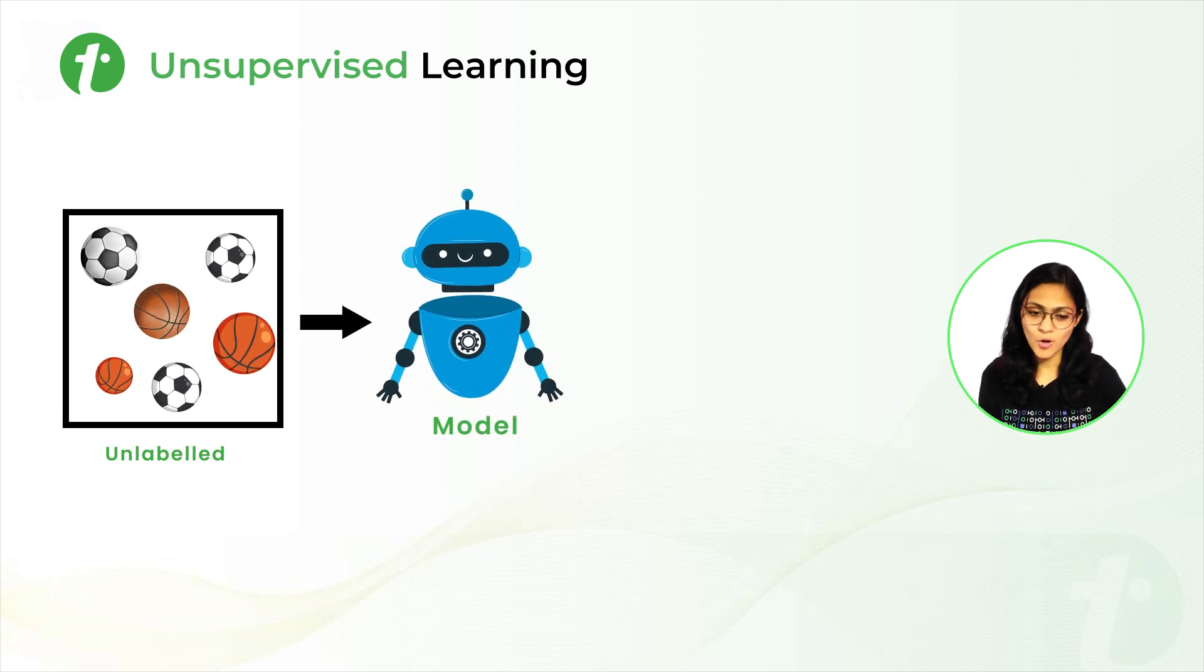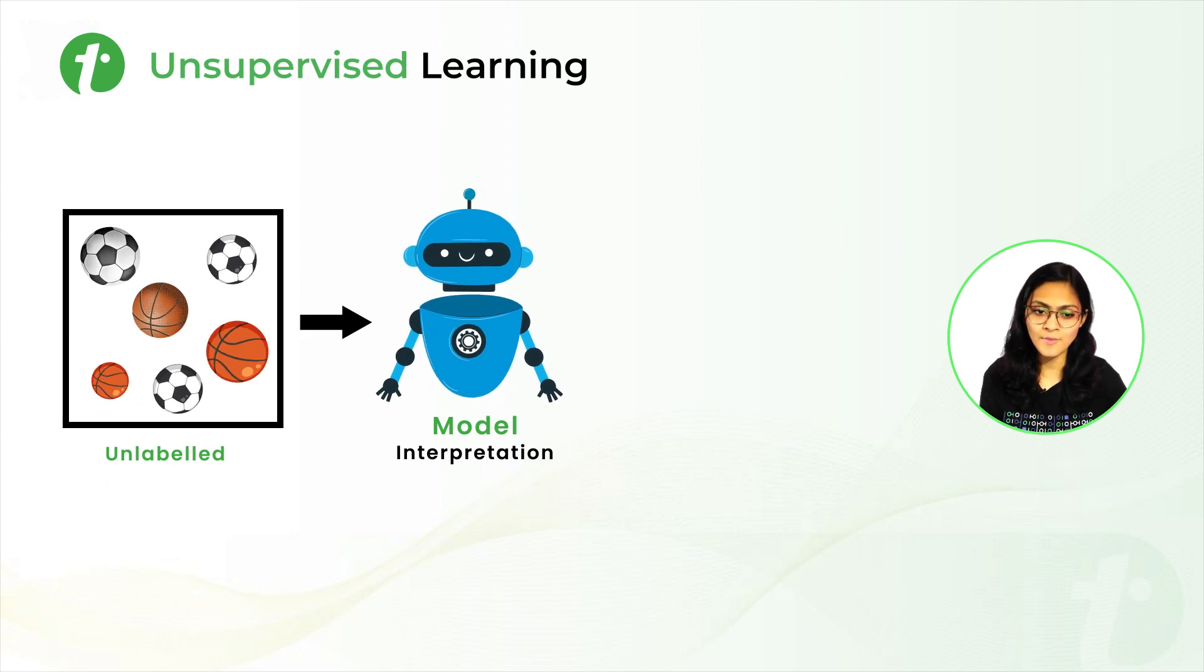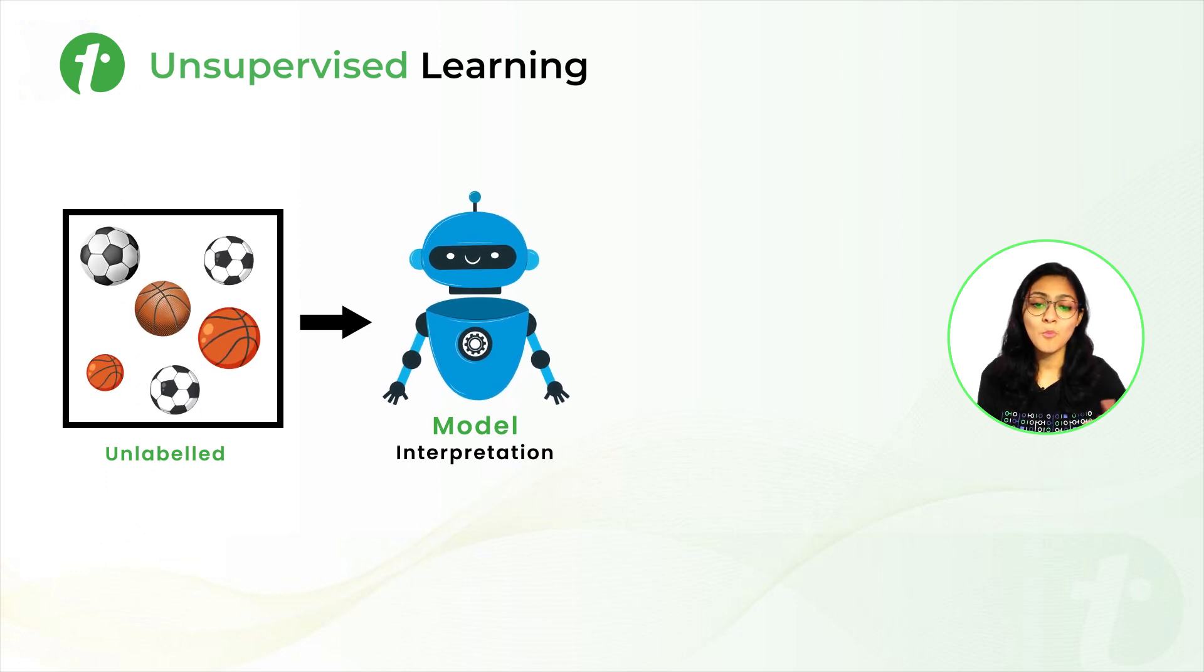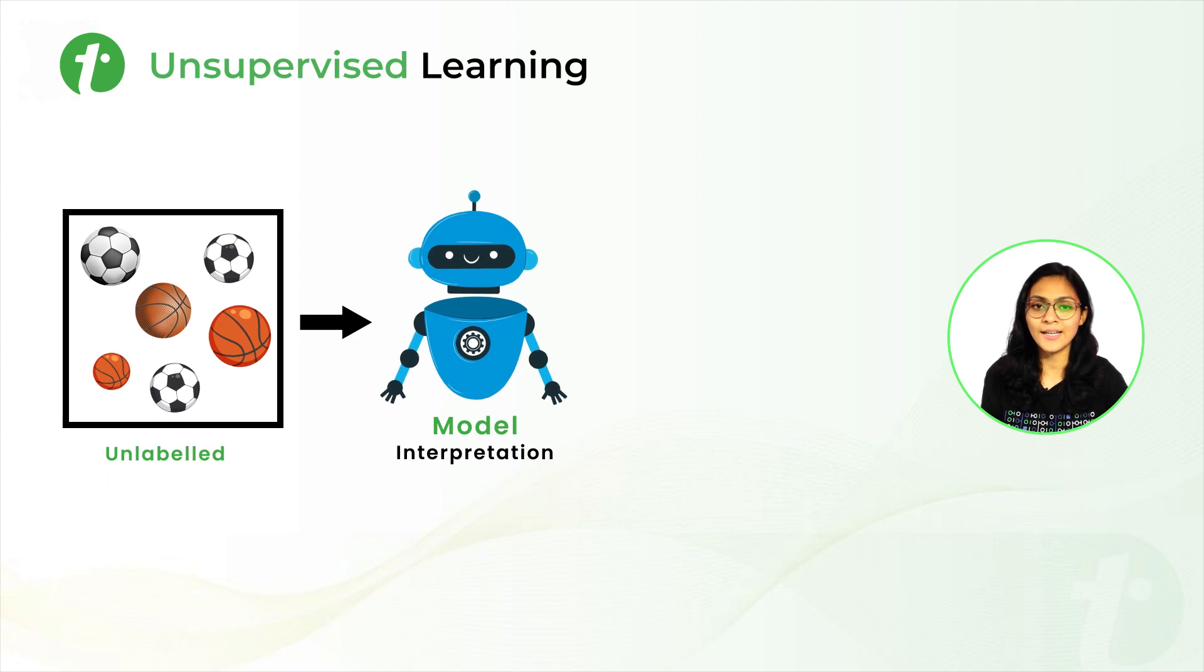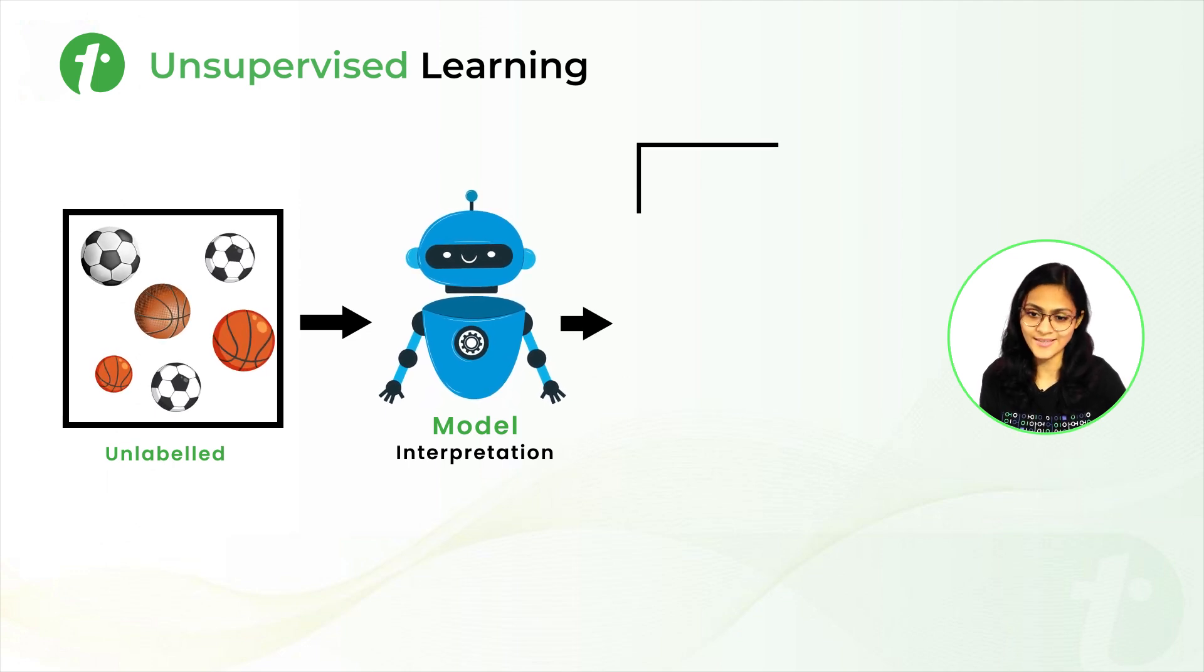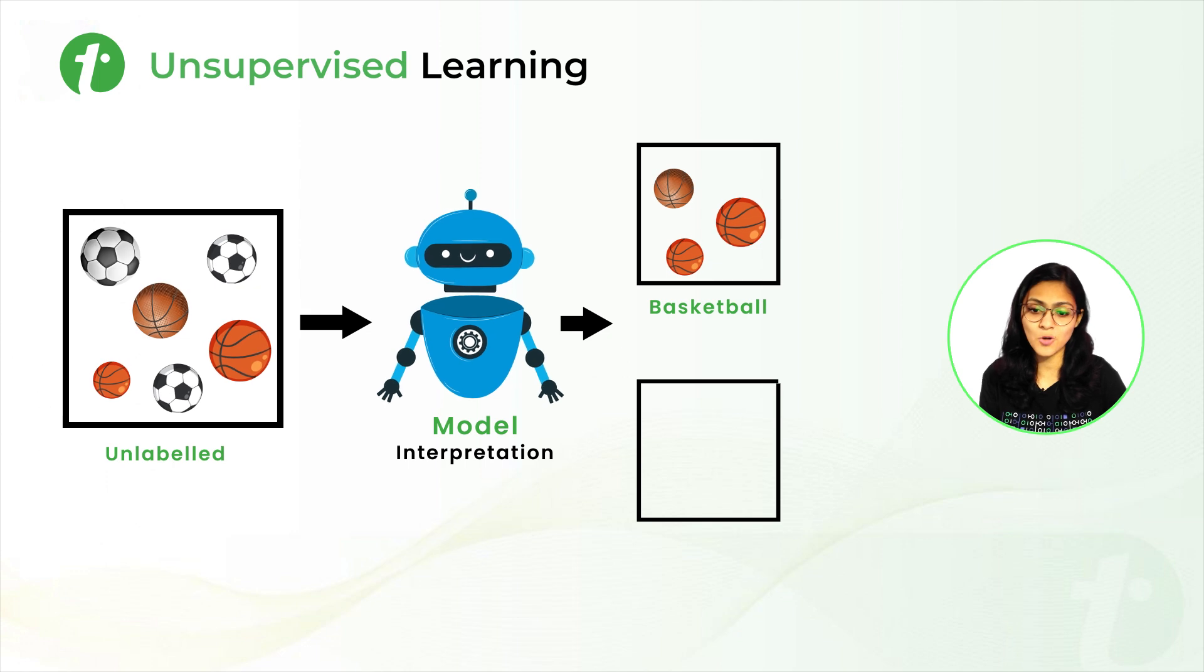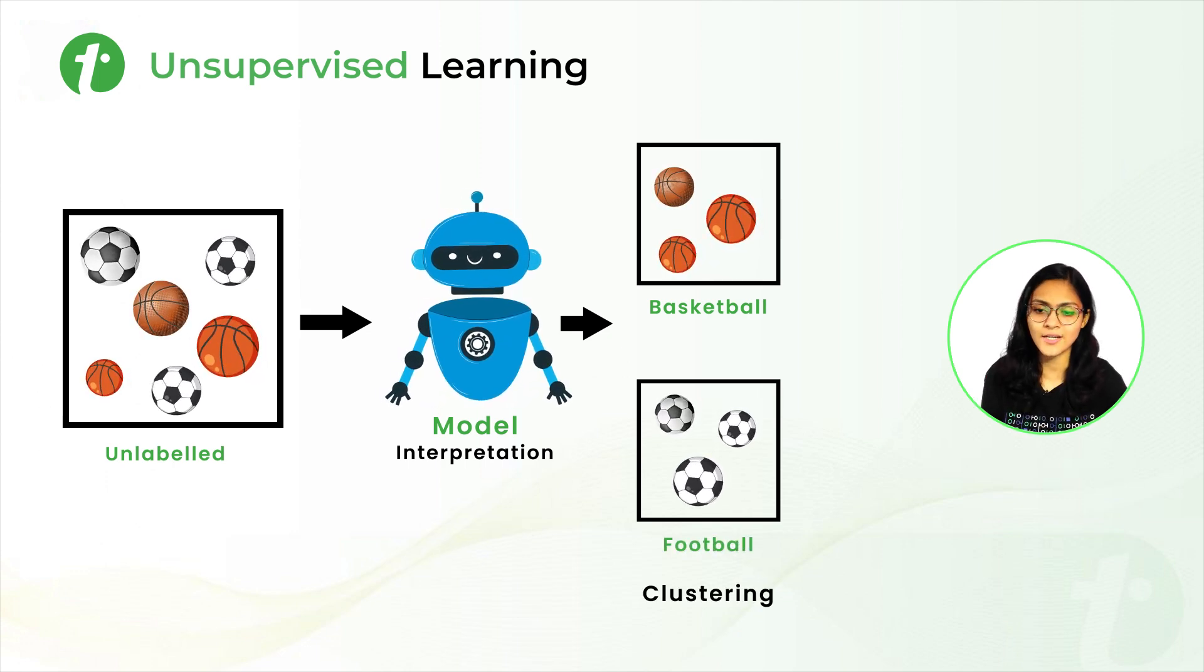This guy is our model and we are providing some unlabeled data to the model. That means we are not telling the model that this kind of ball is basketball and this kind of ball is football. But the model will interpret some hidden patterns from this unlabeled data and group them. The model may not know that this group is basketball and this group is football, but it will group them on the basis of some hidden patterns.